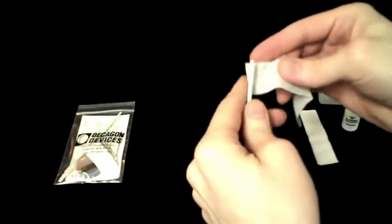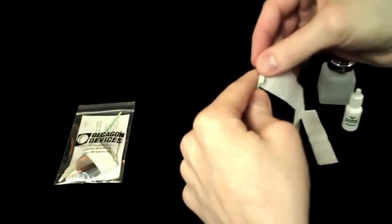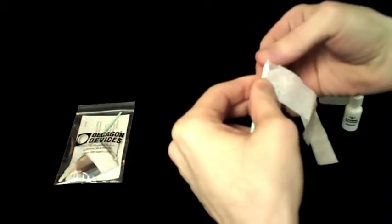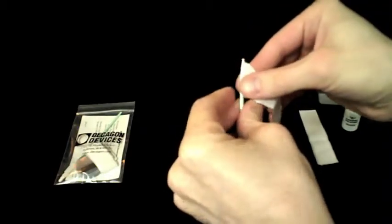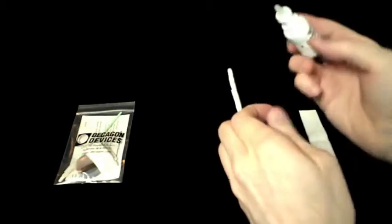Next, wrap a new kimwipe around the end of the thin plastic rod from the cleaning kit and moisten it with Decagon Cleaning Solution. Kimwipes are used for cleaning the Aqualab because they don't contain any adhesives or other additives that can get left behind during the cleaning process.